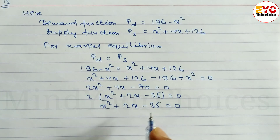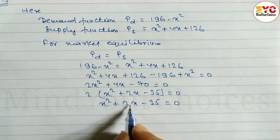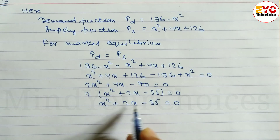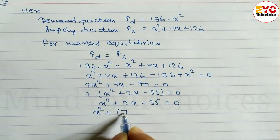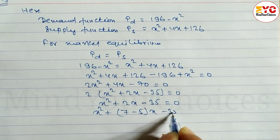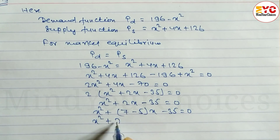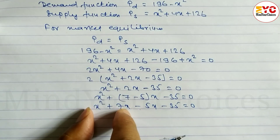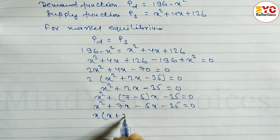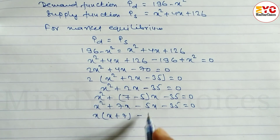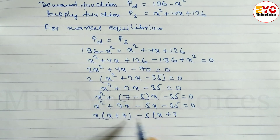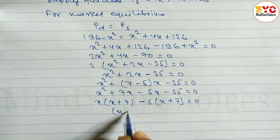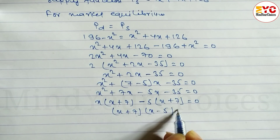Now we factorize. Multiply gives 35, subtract gives 2. The factors are 7 and minus 5. So: x squared plus 7x minus 5x minus 35 equals 0. Taking x common from the first two terms gives x(x plus 7), and taking minus 5 common from the last two terms gives minus 5(x plus 7) equals 0. Therefore (x plus 7)(x minus 5) equals 0.